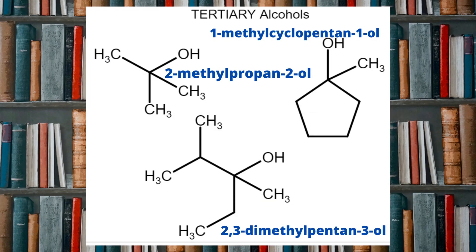That leads us nicely into the tertiary alcohols, however this is really the only time we're going to examine them in this video since they don't oxidize like the primary and secondary alcohols do. If that carbon which is directly bonded to the oxygen of the OH functional group is itself directly bonded to three other carbon atoms and no hydrogen atoms directly, then we've got a tertiary alcohol. The simplest example is 2-methylpropan-2-ol. Have a close look at the structures on screen and look for how that carbon bonded to the oxygen is also bonded to three other carbon atoms directly.